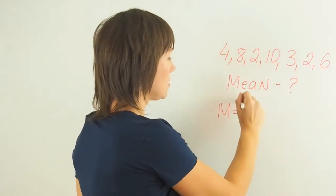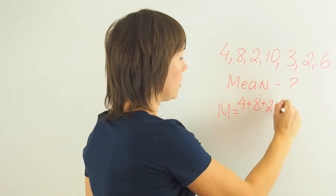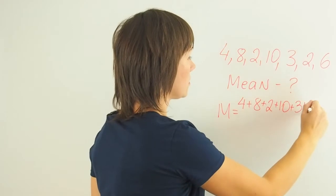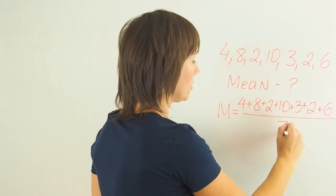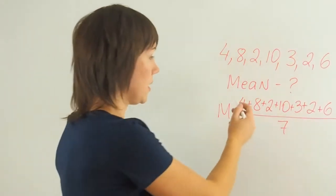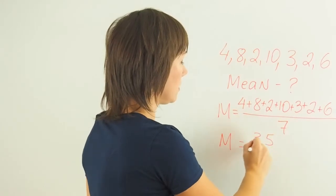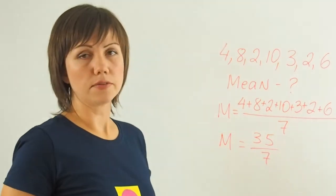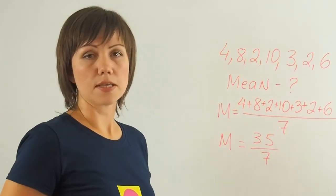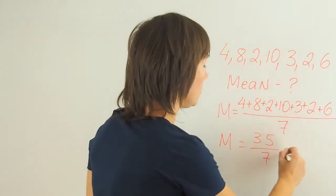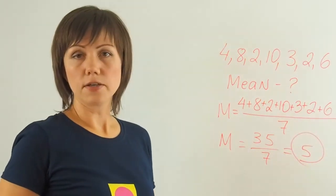So m equals 4 plus 8 plus 2 plus 10 plus 3 plus 2 plus 6 all over 7. If I add all of these numbers, I'll get 35. So 35 divided by 7. So what is the average number of this set? What is the mean? It's equal to 5. The correct answer is 5.